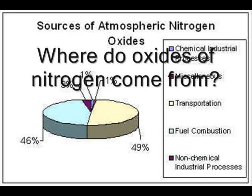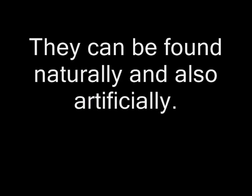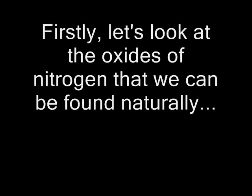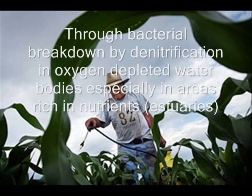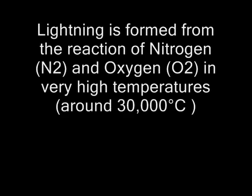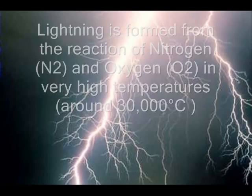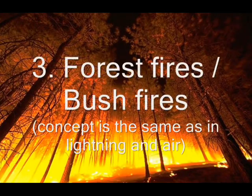So where do these oxides come from? They can be found naturally and artificially. Here are some examples of oxides found naturally. First, in soil and water — through bacterial breakdown in oxygen-depleted water bodies. Second, in lightning and air — lightning forms through a nitrogen and oxygen reaction at high temperatures of around 30,000 degrees Celsius. Third, in forest fires and bush fires.